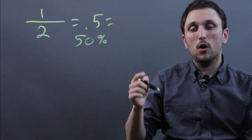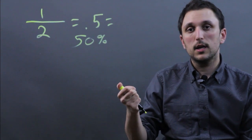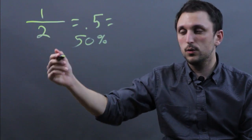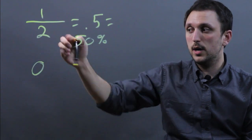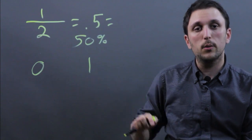Now the thing with probability is all probability is measured between 0 and 1. If it's 0 out of 2, then we say 0. If it's 2 out of 2, then we say 1. So all the decimals have to be between 0 and 1.